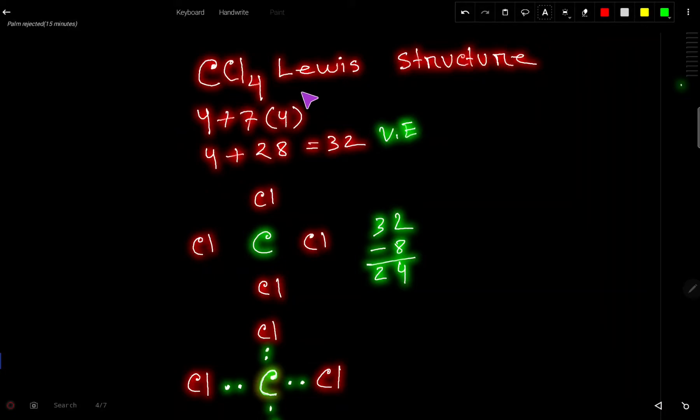CCl4 Lewis structure or Lewis dot structure for CCl4, carbon tetrachloride. First we have to find out the valence electrons of carbon tetrachloride. Look, carbon is an element of group 4A, that is why it has four valence electrons.